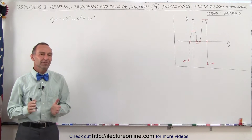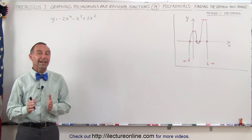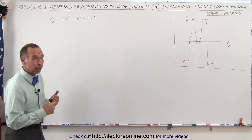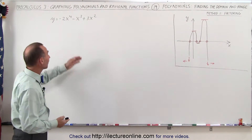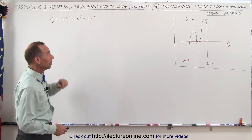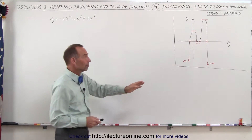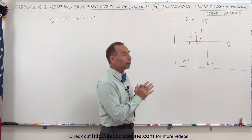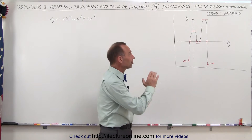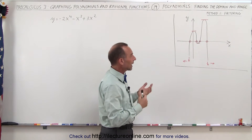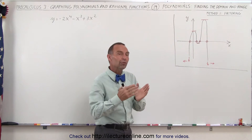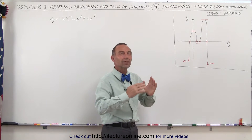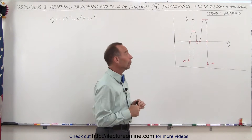Welcome to ElectronLine. In this video, we're going to talk about how to find the domain and the range of a polynomial. It can be a polynomial of any order. Here we have an example of a 4th-order polynomial. We're looking for the extreme points — the local extrema and the absolute extrema — to get a picture of what the polynomial looks like graphically so we get a feel for where the limits are of the range and the domain.